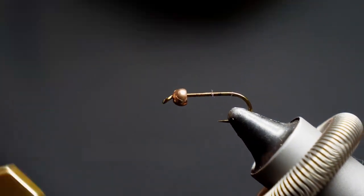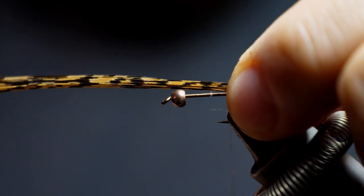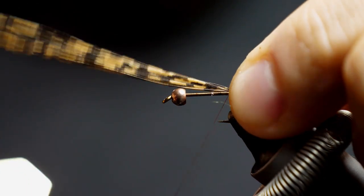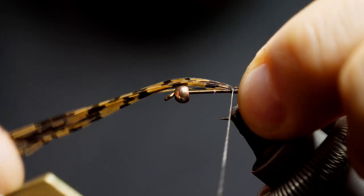Once you've selected your pheasant tail fibers and you're going to build this tail, I find shorter's better. You see a lot of people put the tails basically the length of the hook, but I like to go quite a bit shorter. Now I'm building a ball at the end, and it'll just help those fibers to splay out a little bit and spread out when you tie it down.